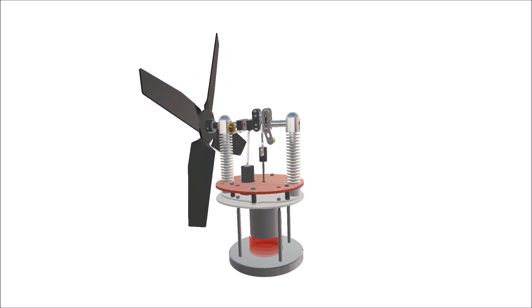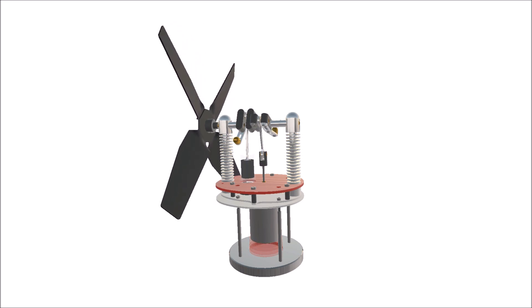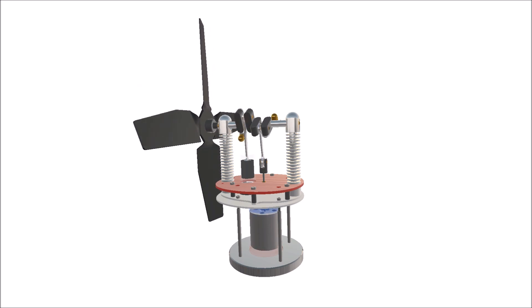When the piston is at the top extent, the rotation of the crank causes the displacer to move downwards. The cool air at the top of the cylinder contracts, sucking the piston down.